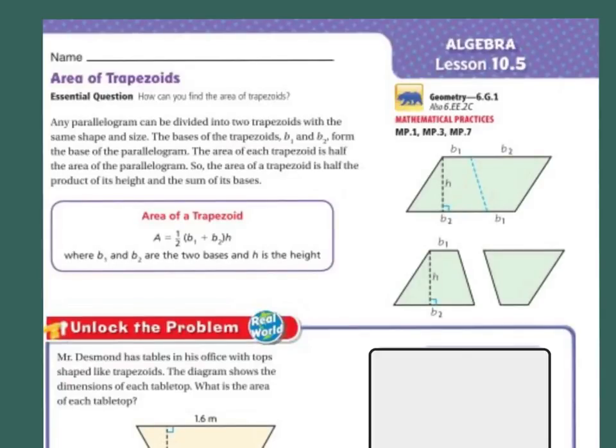Our essential question: how can you find the area of trapezoids? Any parallelogram can be divided into two trapezoids with the same shape and size. The bases of the trapezoid, B1 and B2, form the base of the parallelogram. The area of each trapezoid is half the area of the parallelogram. So the area of a trapezoid is half the product of its height and the sum of its bases.